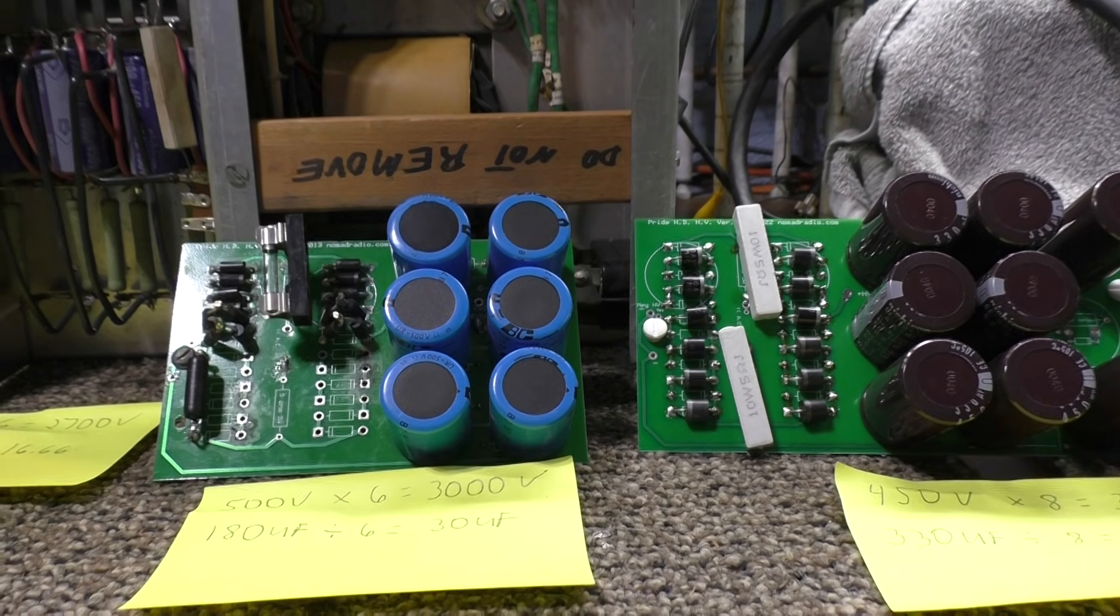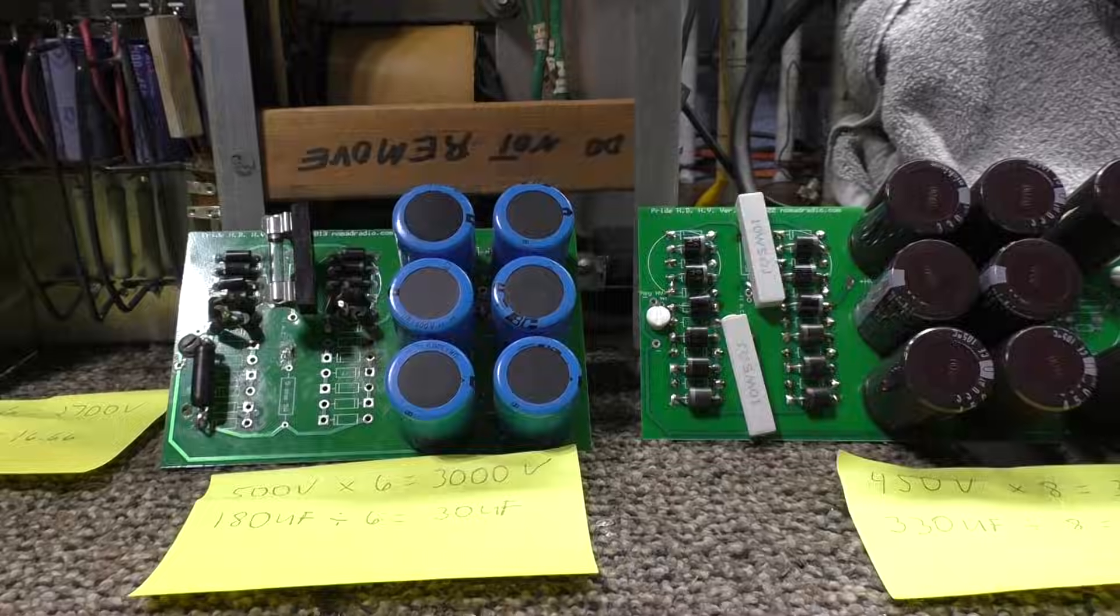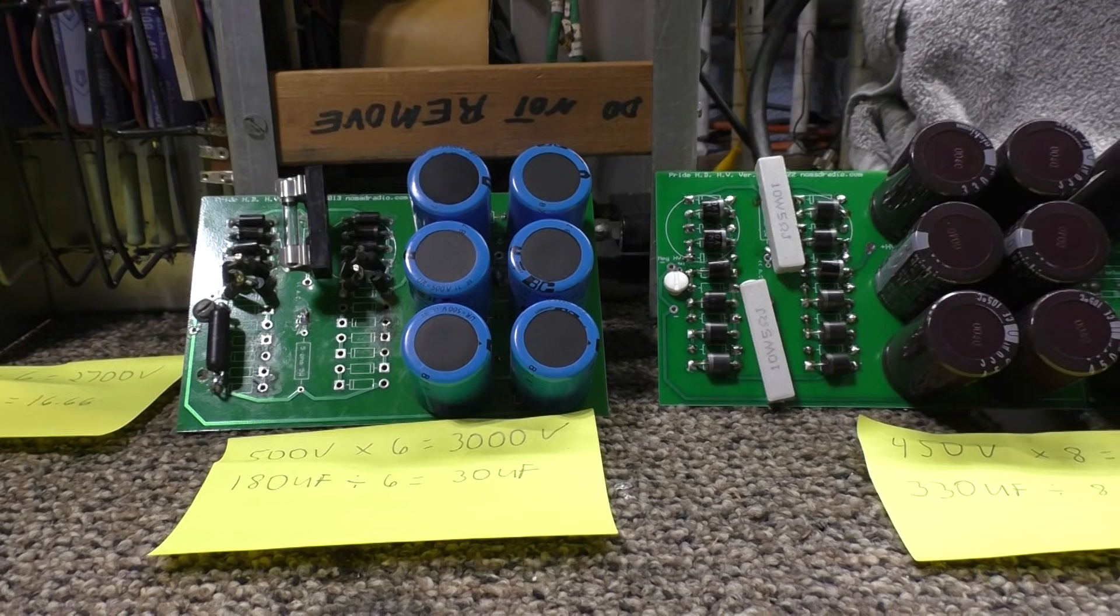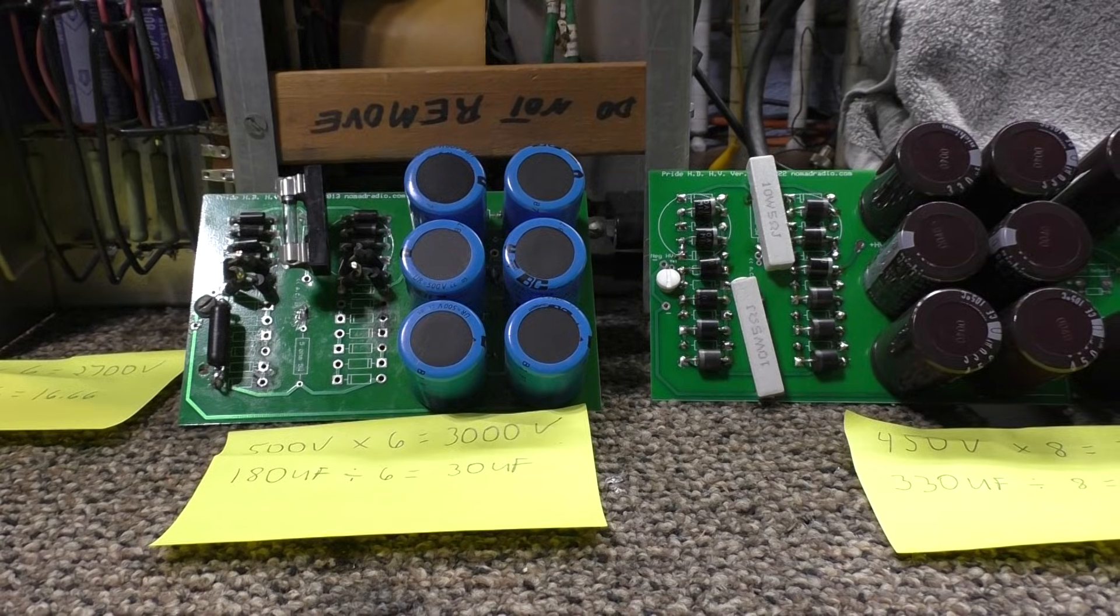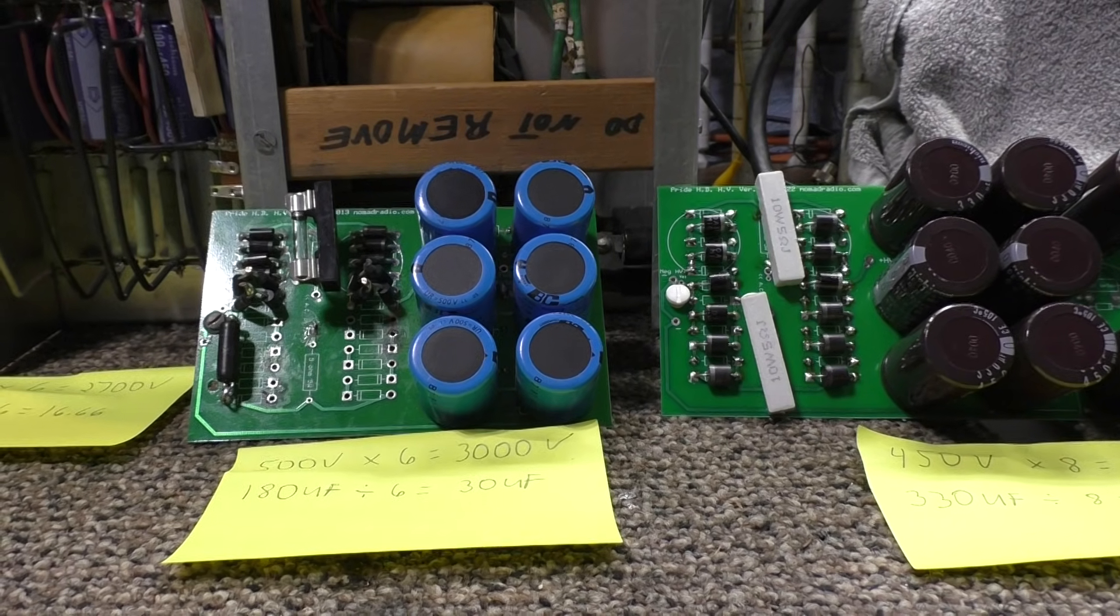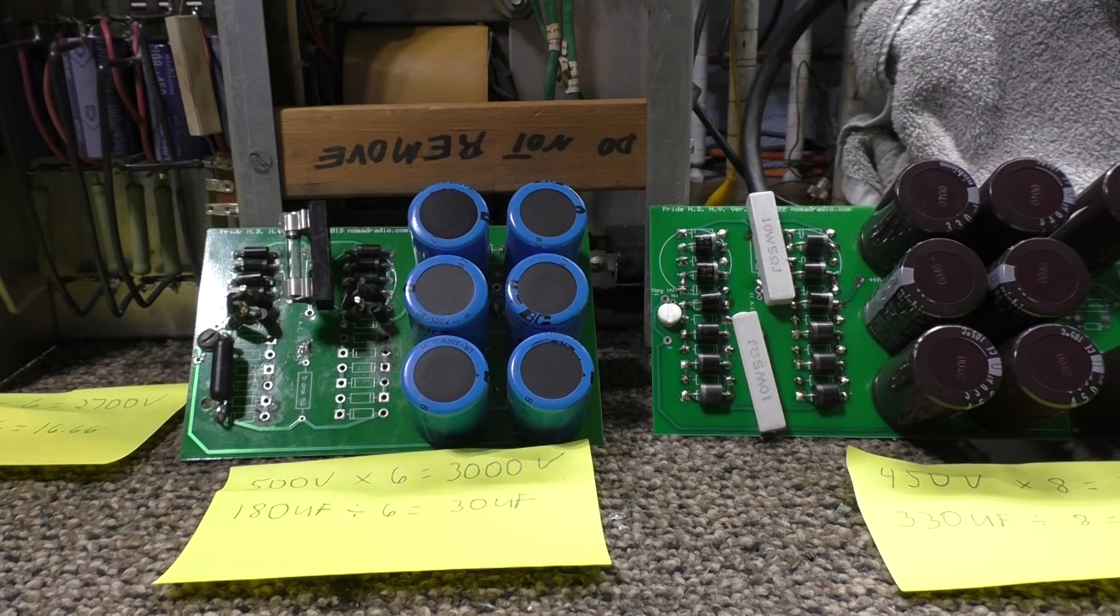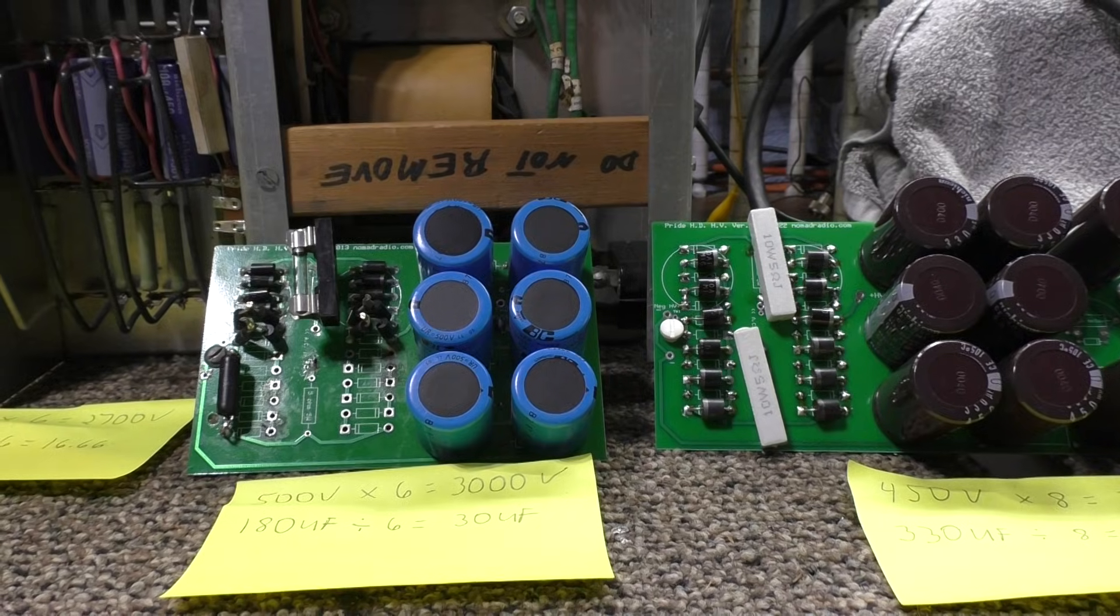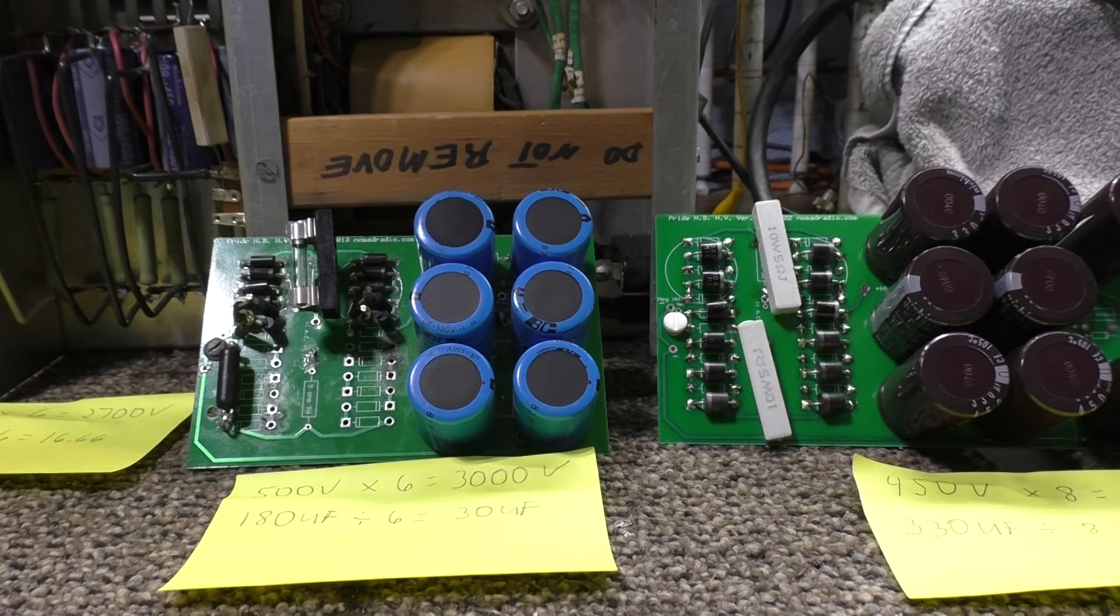Two caps in series would be at 900 volts, which doesn't give you a lot of safety rating. So a lot of these sweep tube amps, you will see three in series, like three 400s or something like that. And you use three of them, you got 1200 volts safety rating, and the amp's running at 800 volts.